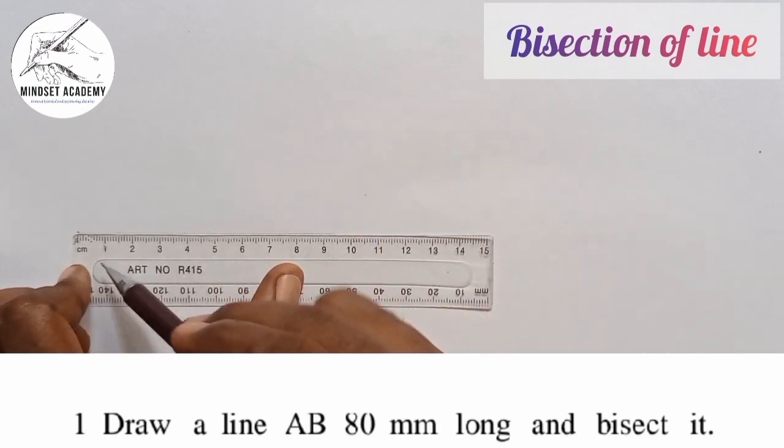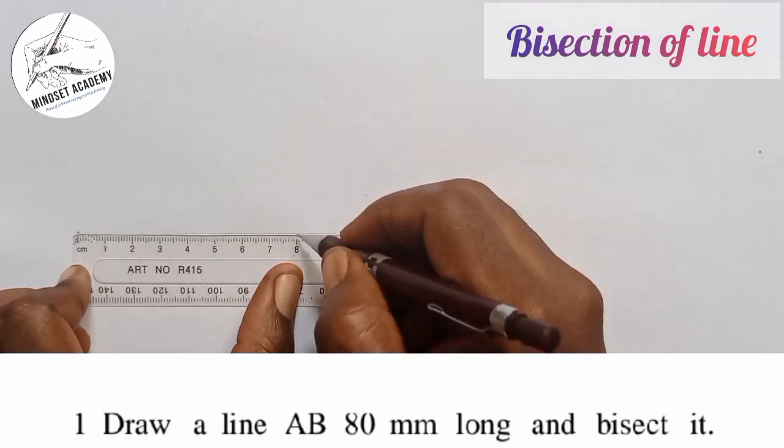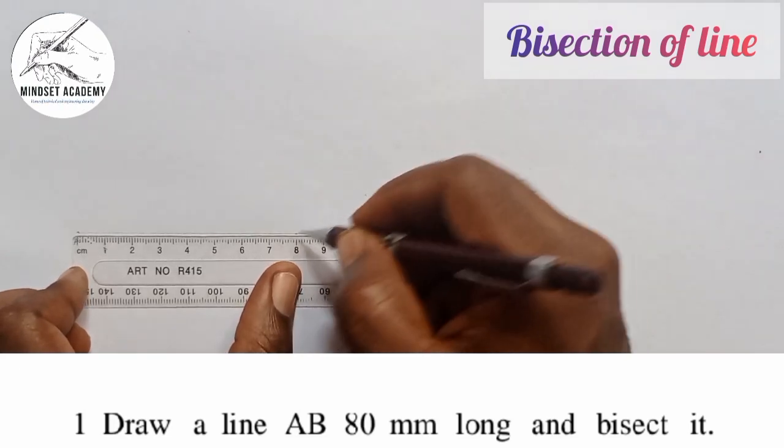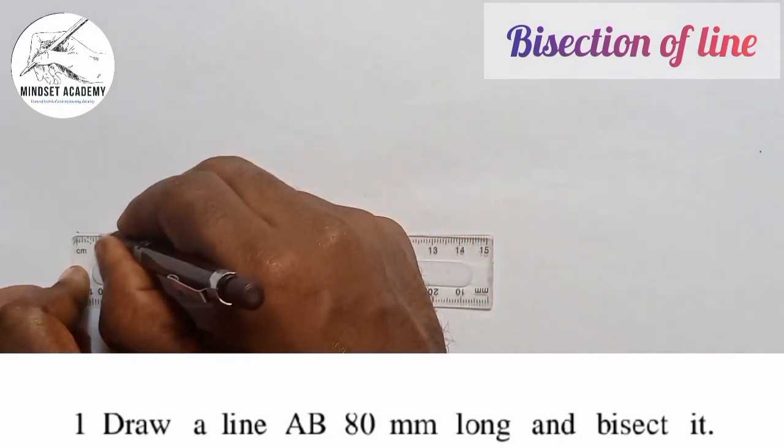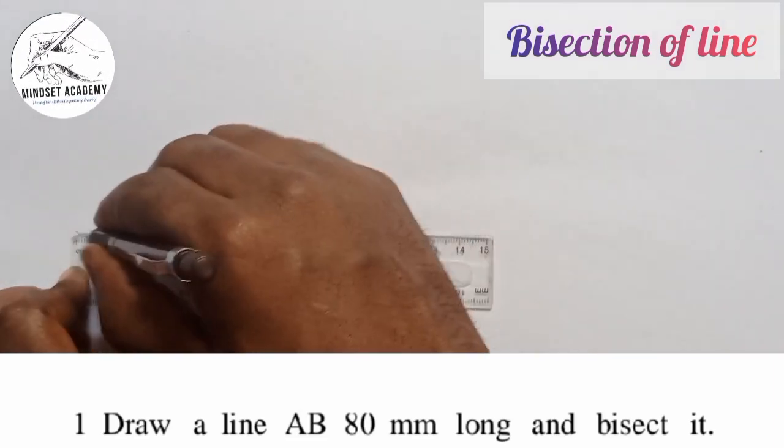8 centimeter is 80 millimeter, so I'm going to mark that point as my point B. Since that's what I'm looking for, I'm going to mark it this way.